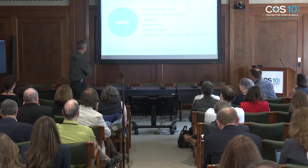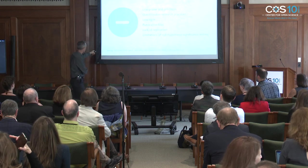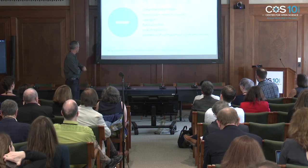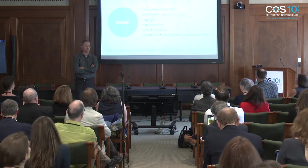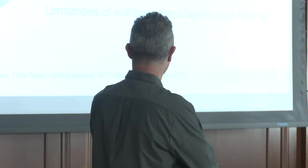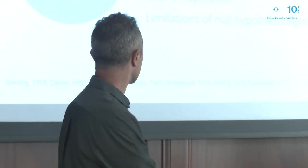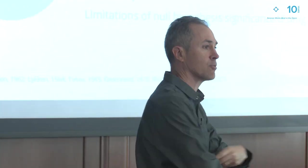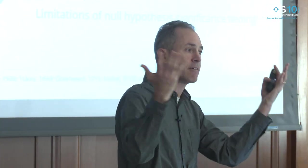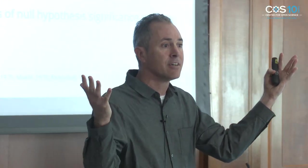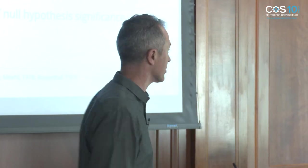When you look at these papers — 1959, 1962, 1968 — they raise all these challenges that are happening in how the scientific process works. We have low power and precision. We're not actually having sample sizes of sufficient size to investigate the questions that we're investigating.